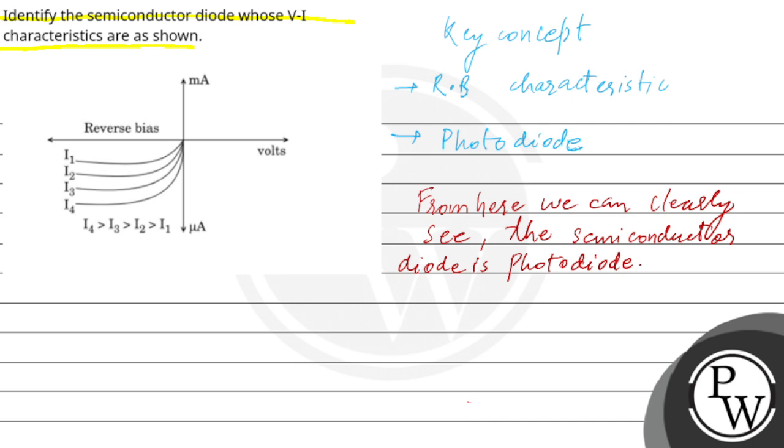This is the characteristic of photodiodes. It is the characteristic of photodiodes in reverse bias condition. So I hope you all understood. Best of luck.